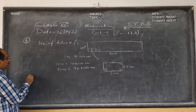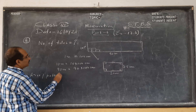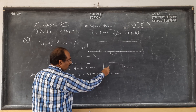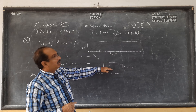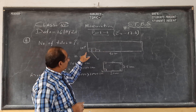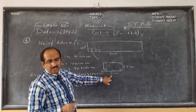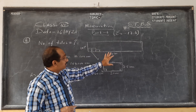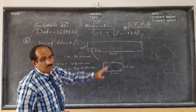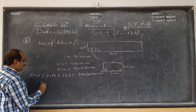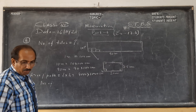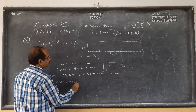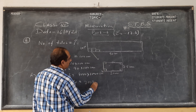Total area of the path in centimeters: length into breadth is 9000 into 1000 centimeter square. Now, total area divided by area of 1 tile gives the number of tiles. Remember to use the same unit. I have converted everything to centimeters. Area of 1 tile — it is a rectangle — is 20 into 7.5 centimeters square.